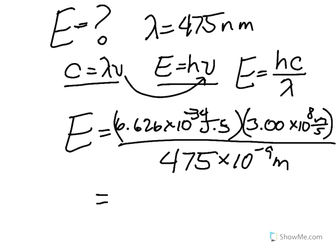Once you've plugged this into your calculator and rounded to the correct number of significant figures, this comes out to be 4.18 times 10 to the negative 19 joules.